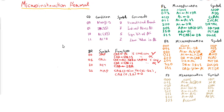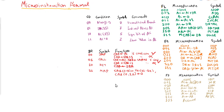In the previous video we discussed what is sequencing and various components of a sequencer like conditional branching, unconditional branching, subroutine, and incrementer. Now we will focus on micro instruction format — how programs are stored into the micro program control memory.